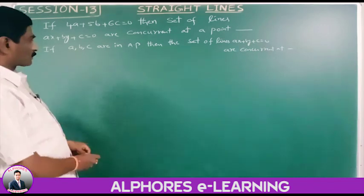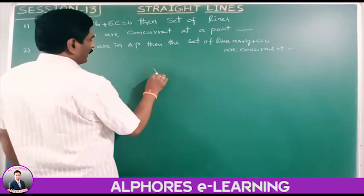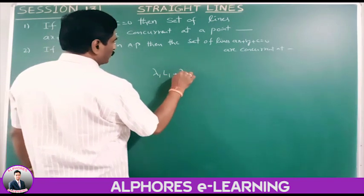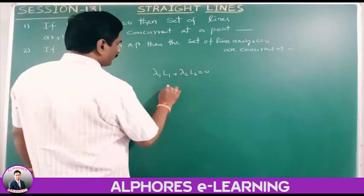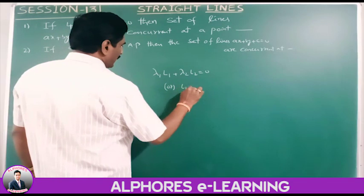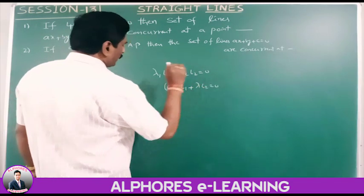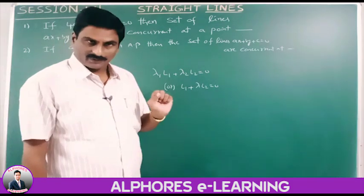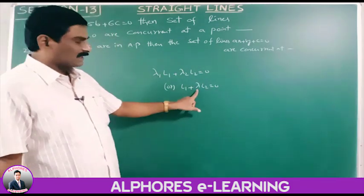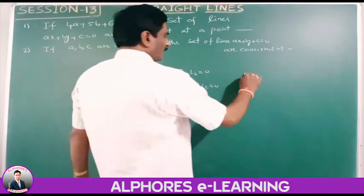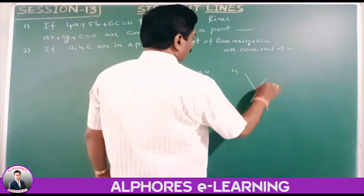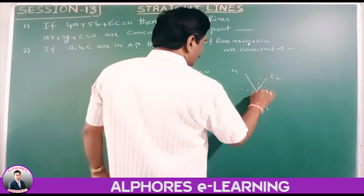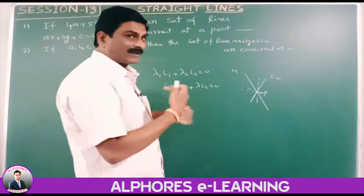We already discussed this concept. The family of concurrent lines takes the form lambda-1 times l1 plus lambda-2 times l2 equals 0. For different values of lambda, we get different lines. If l1 and l2 are intersecting lines at point P, then any line passing through P is said to be part of the family of concurrent lines.